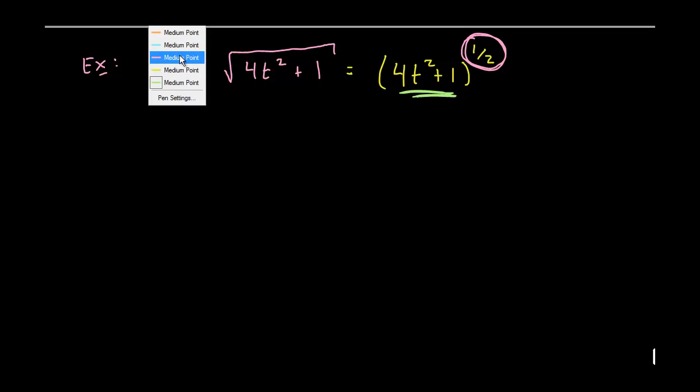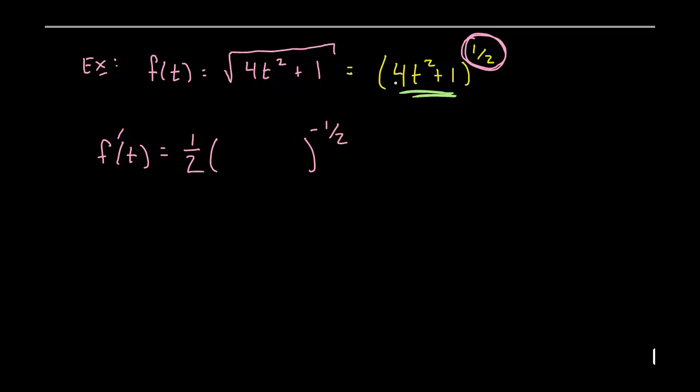Let's do this slowly term by term. f'(t) would be equal to one-half, power rule: one-half comes down, one-half blank to the minus one-half. Now what goes in the blank? Is it 8t since that's the derivative of the inside? No, it's not. We just copy the inside from the original function. So it would be (4t²+1) and then we follow that with the derivative of the inside, which is 8t.